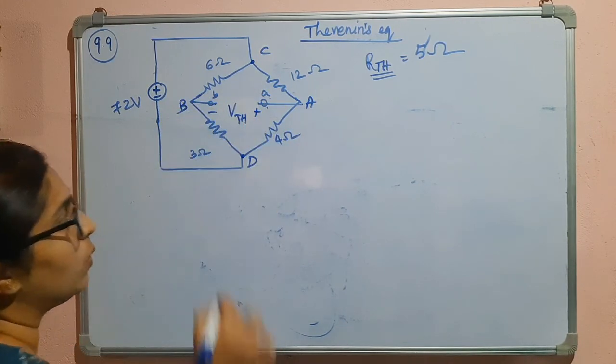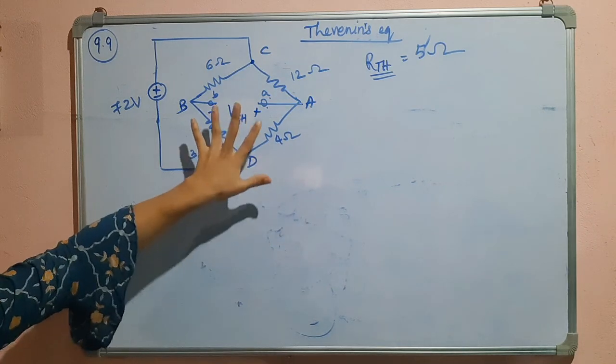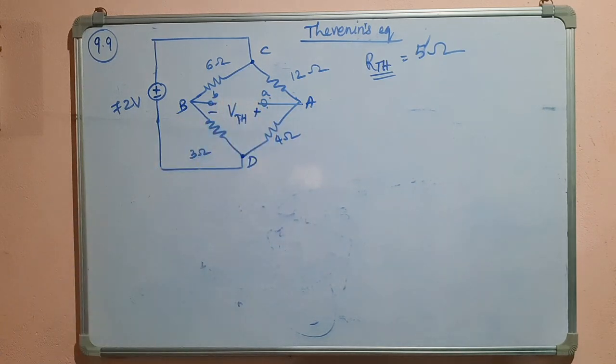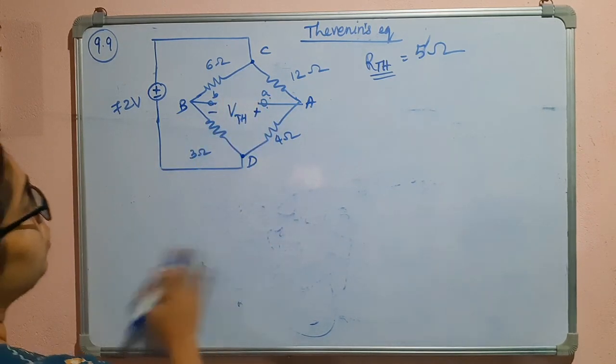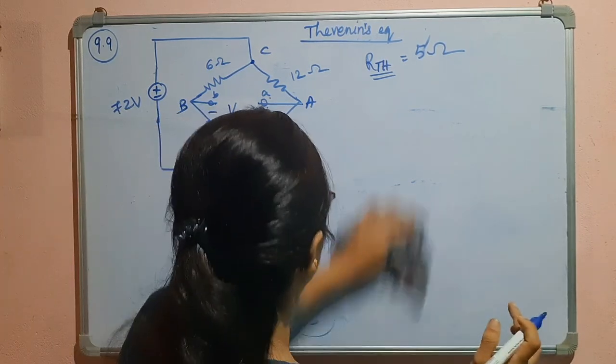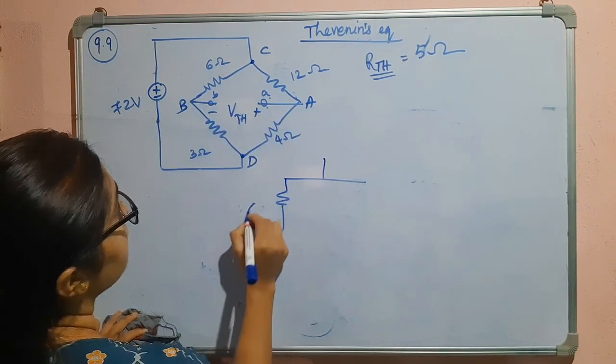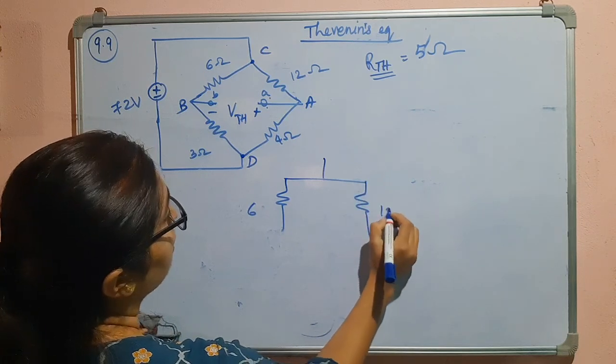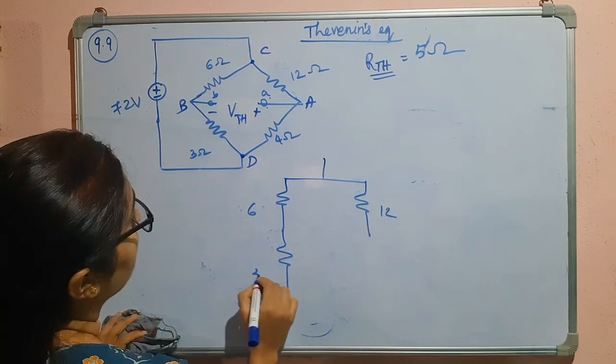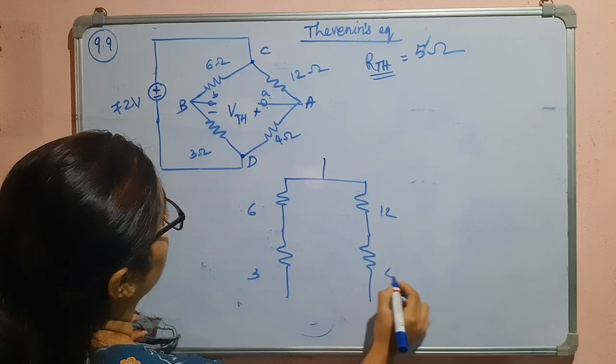So this is higher potential, this is lower potential. So we have to find this voltage now. For that what we can do is we can write the circuit like this. This is 6, this is 12. Here we have 3, here we have 4.